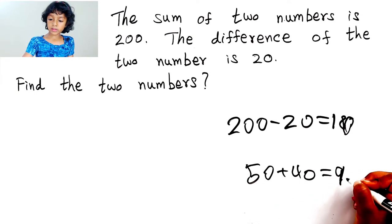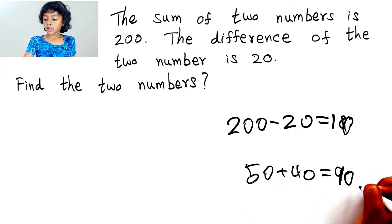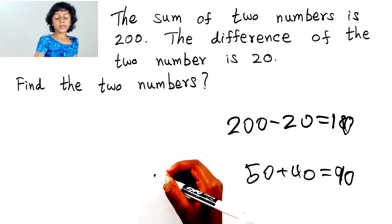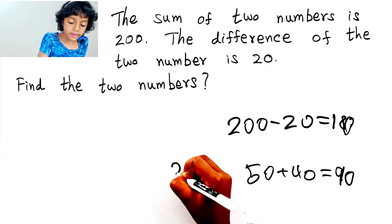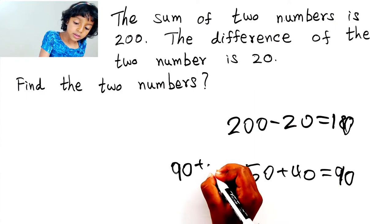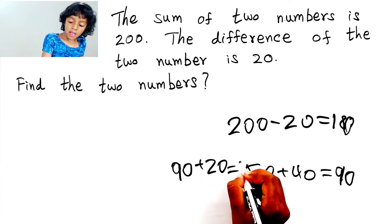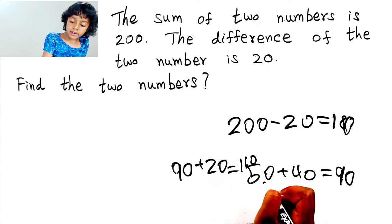So, now the two numbers are equal. So, let's add 20 more to 90. So, 90 plus 20 equals 110. Okay.